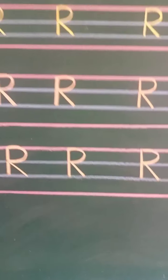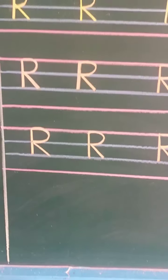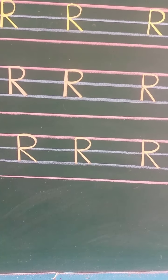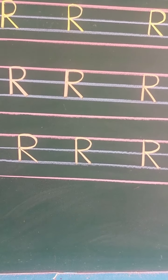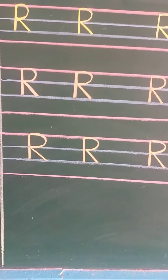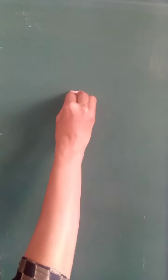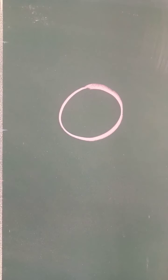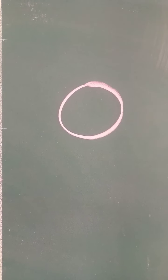So like this, my dear students, you have to write the full page of letter R. Write it in neat and good handwriting. Now let us draw the picture of R. For R, my dear students, you will draw a circle like this. R for rabbit.